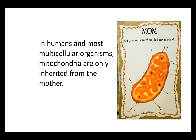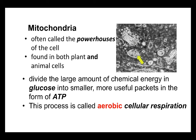Sperm deliver the other half of the DNA to the egg; fertilization happens, and now we have two full sets of chromosomes, which is what you need. If you remember anything from high school biology, it's probably that mitochondria are the powerhouse of the cell. We find them in both animal and plant cells. The superpower of mitochondria is that they can take the massive amount of chemical energy present in the bonds of a glucose molecule and repackage it into smaller, more useful units in the form of ATP.